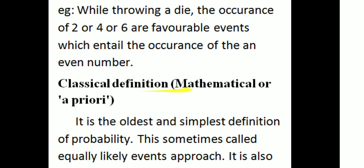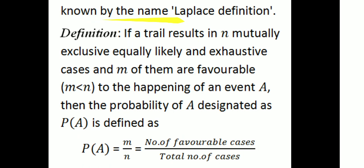The classical definition of probability — also called the mathematical or a priori definition — is the oldest and simplest definition of probability, sometimes called the equally likely events approach, also known as the Laplace definition. If a trial results in N mutually exclusive, equally likely, and exhaustive cases, and M of them (where M ≤ N) are favorable to the happening of an event A, then the probability of A is defined as P(A) = M / N, where M is the number of favorable cases and N is the total number of cases.